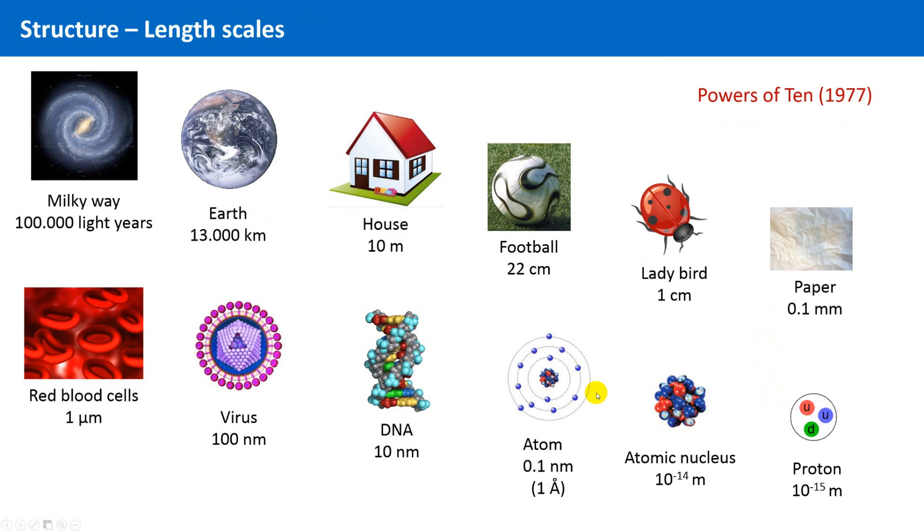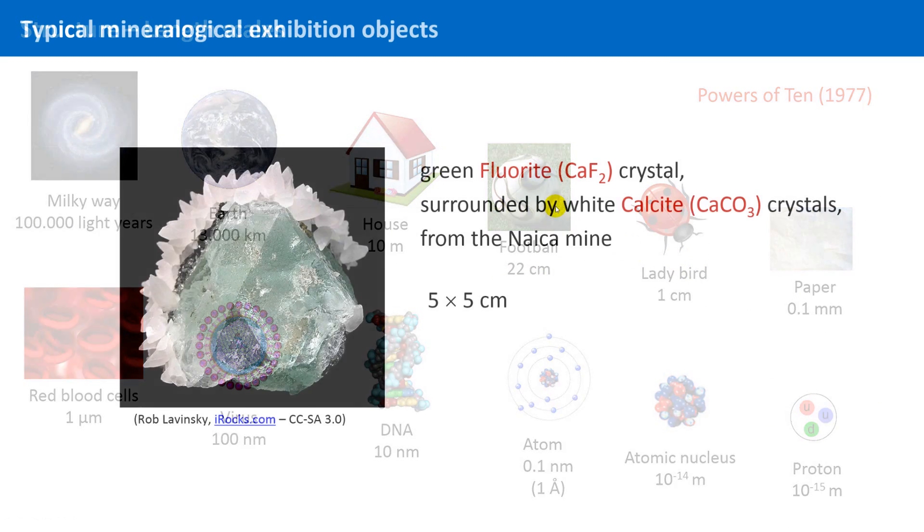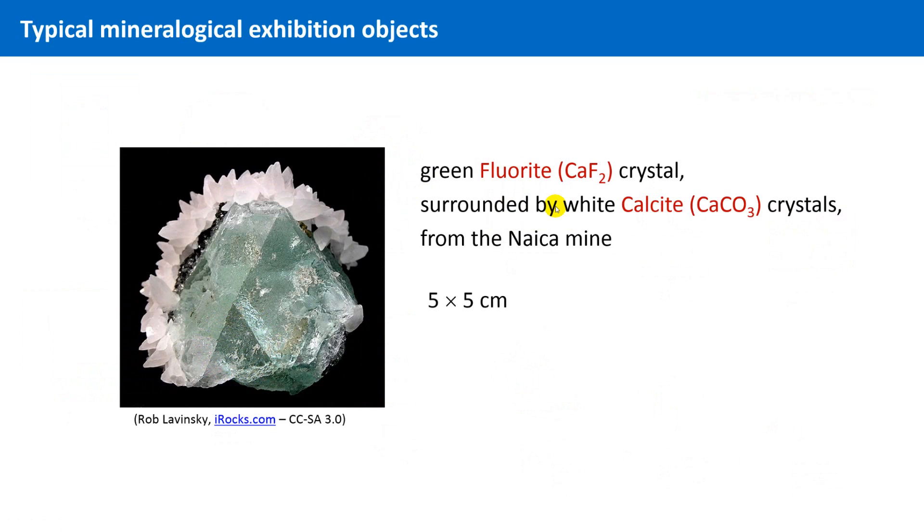Let's switch back to the overview, and we go further down on this scale to a region between a football and a ladybird. This is the typical size of exhibition objects that you can find in science museums. Here we see a greenish fluoride crystal, normally colorless and transparent, here greenish due to certain impurities. This fluoride crystal is framed by agglomerations of smaller calcite crystals, which is calcium carbonate. This object is 5 x 5 cm, and also from the mine of Naica.